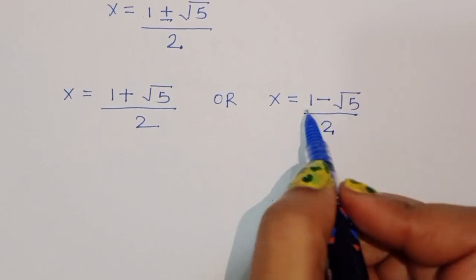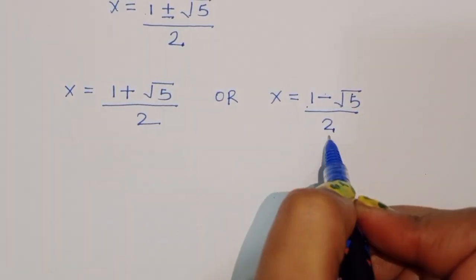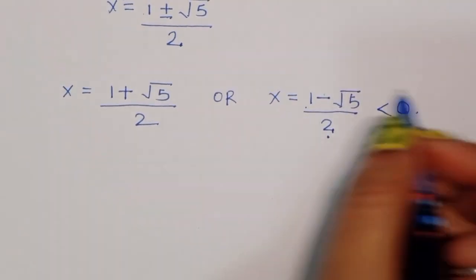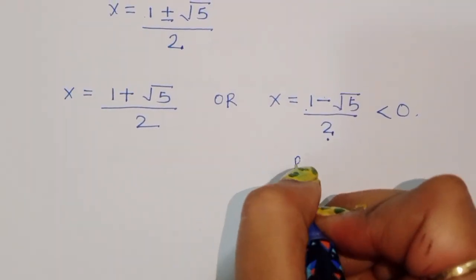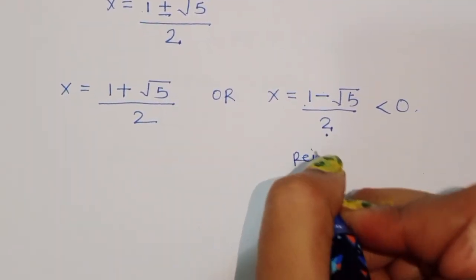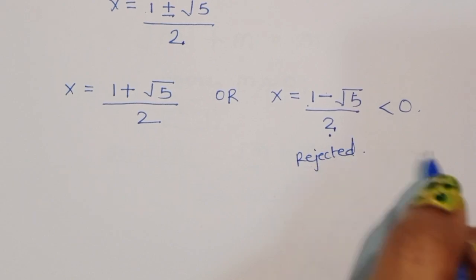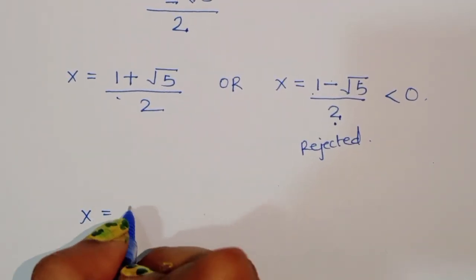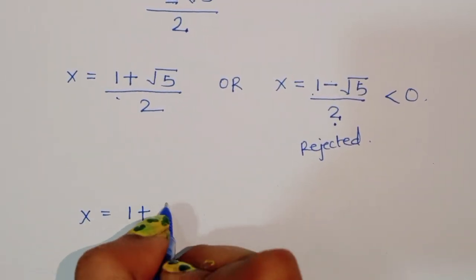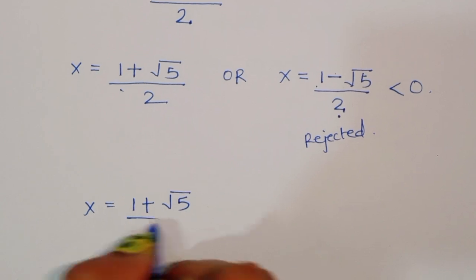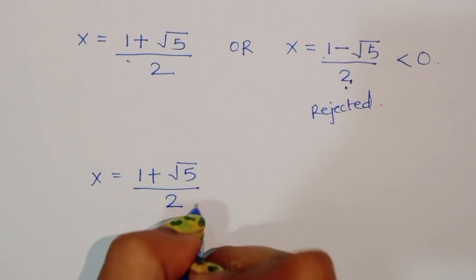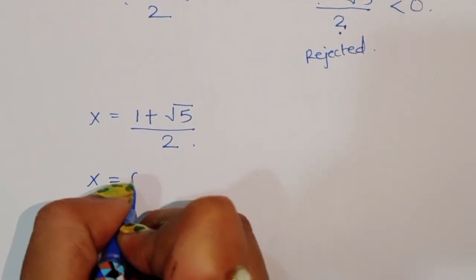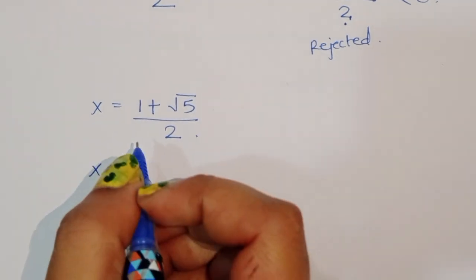However, (1 minus square root of 5) divided by 2 is less than 0, so this solution is rejected. We are left with two valid solutions: x equal to (1 plus square root of 5) divided by 2, and x equal to 0.